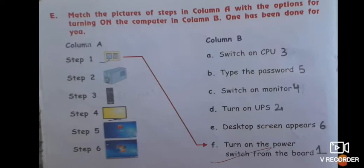Step 5 is they are asking for the password, so B, type the password. 6, finally the desktop screen, so 6 step is E, desktop screen appears.